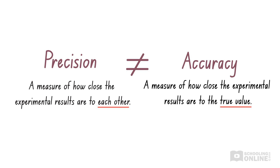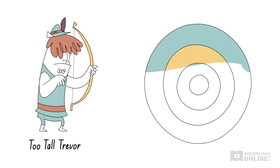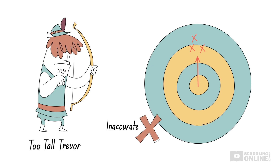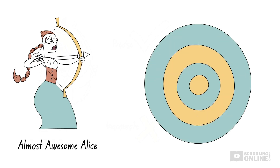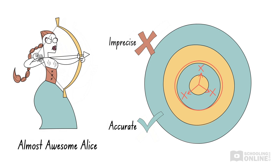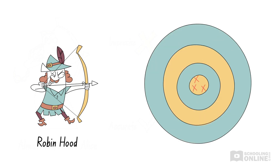Even if experimental results are accurate, they might not be precise. Let's return to Too Tall Trevor from our previous video on accuracy. Too Tall Trevor is an inaccurate archer because his arrows always land above the bullseye. However, his shots are very precise because all the arrows land close to each other. His sister, Almost Awesome Alice, faces a different dilemma. She is quite an accurate archer, as her arrows often land near the bullseye. Unfortunately, her arrows are spread out, so she is less precise than Too Tall Trevor. Neither sibling can compare to Robin Hood — his arrows always hit the bullseye and land close together. Therefore, Robin Hood is an accurate and precise archer.